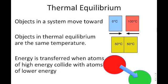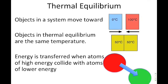Thermal equilibrium is one of the key concepts for this chapter. Objects will always tend to move towards thermal equilibrium — the point at which there is no net change in heat. So if you have something at zero and something at 100 and you touch them together, they'll each end up at 50. It doesn't mean collisions stop — it just means the net result of those collisions is zero.